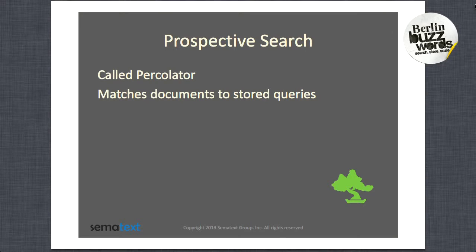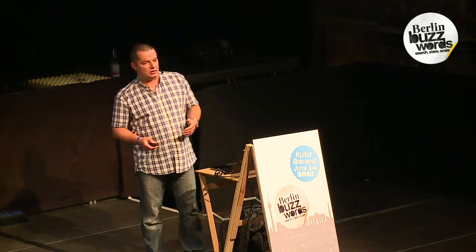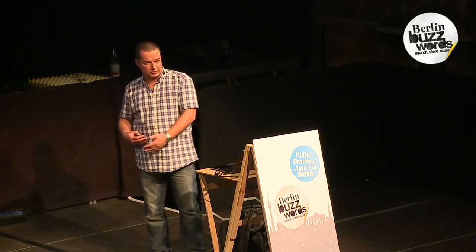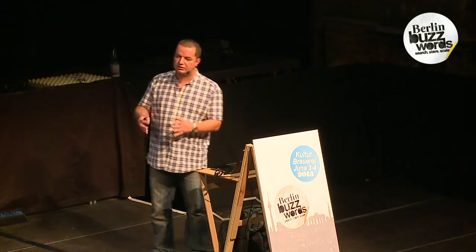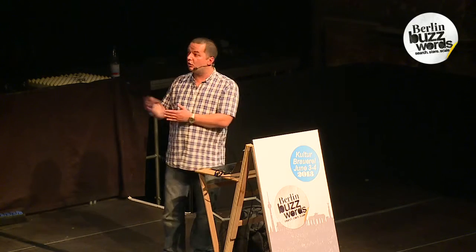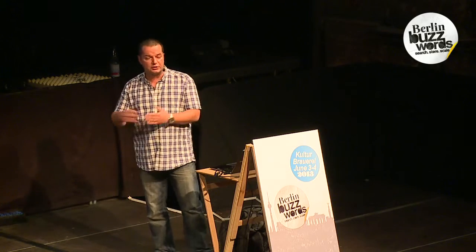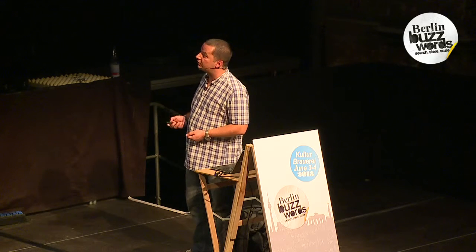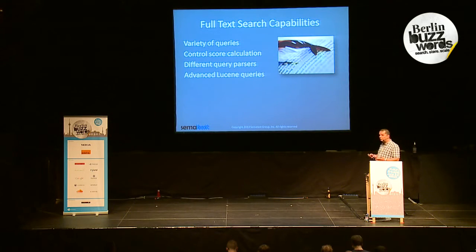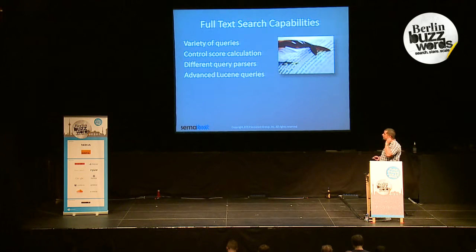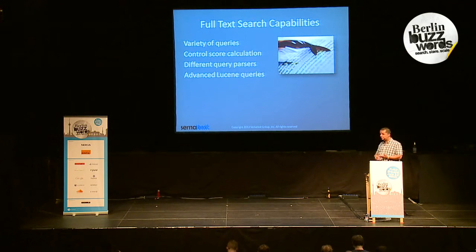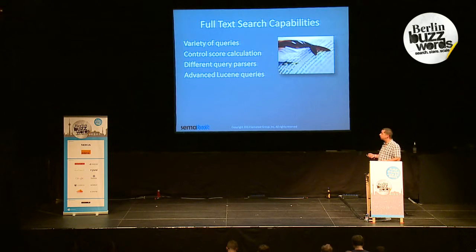Imagine you have a company that observes social media and your clients register queries. You send documents from social media — Twitter tweets or Facebook posts — and they match given queries; you can return them and see which queries matched. For both search engines, we expect a variety of queries and full text search. We want to control the relevancy, so we need to control the score calculation. We want to use different query parsers, and advanced Lucene queries, not only standard Boolean ones.